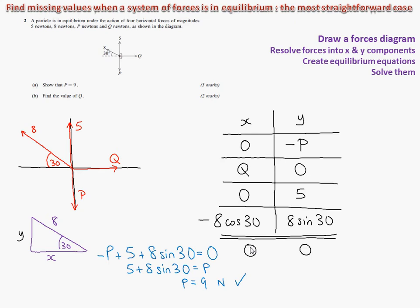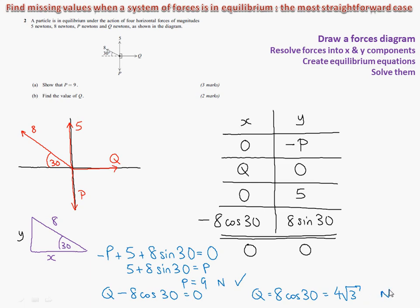Then one similar step finds Q: the X components must also equal 0, so 0 plus Q plus 0 minus 8cos30 equals 0. Adding 8cos30 to both sides gives Q equals 8cos30. Putting that into your calculator gives 4√3, and that is the answer to this question — you could write it as a decimal but 4√3 is fine.